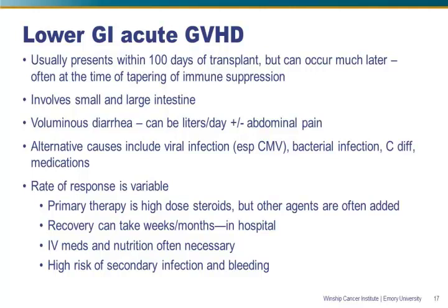Lower acute GI graft-versus-host disease typically occurs within the first 100 days post-transplant, but this is a form of GVHD that can occur much later, sometimes at the time of tapering of immunosuppression. We're talking about the small intestine and colon, usually with continuous involvement — not one spot, but throughout the mucosa of the bowel. We have to think about infectious problems, particularly CMV, bacterial infection, and C. diff, as well as medications. This is the type of GVHD where the response to therapy is much more variable, and the primary therapy is high-dose steroids, often with additional agents added.